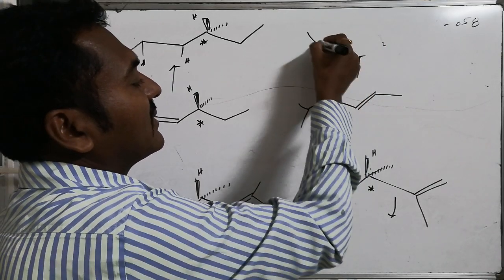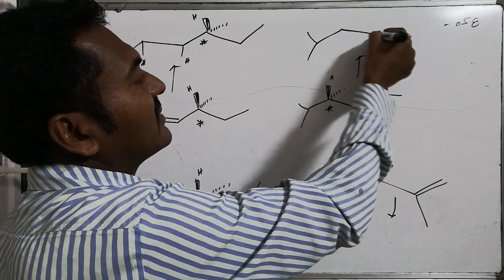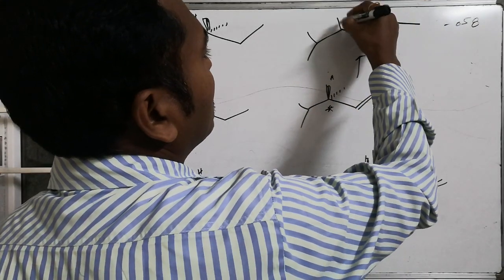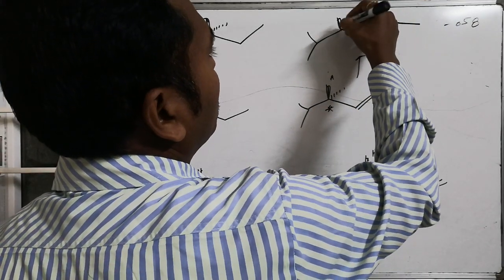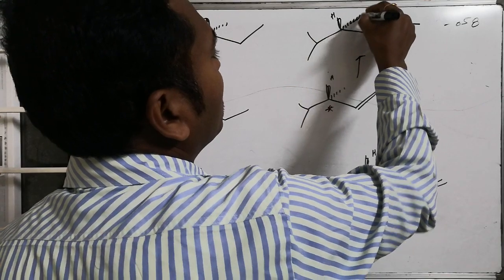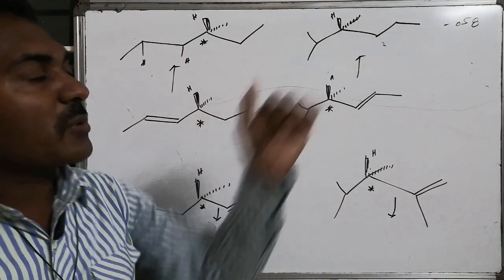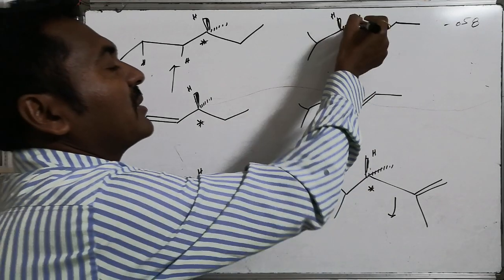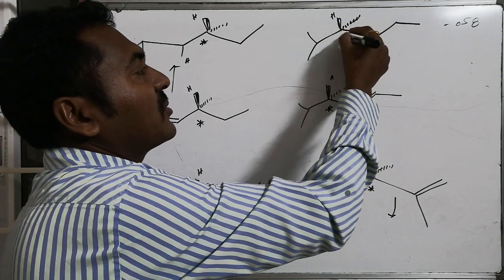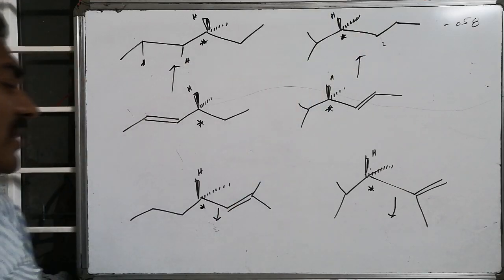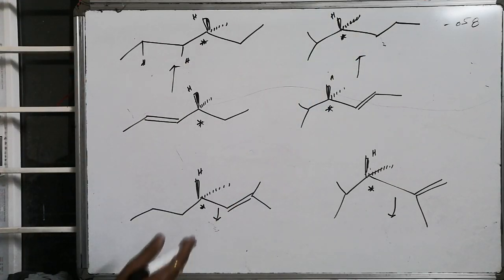For the second compound, the product becomes saturated; it now has hydrogen, methyl, and an isopropyl group at the chiral center. These groups are all different — methyl, hydrogen, isopropyl — so chirality is maintained. The product is optically active.